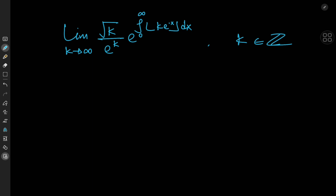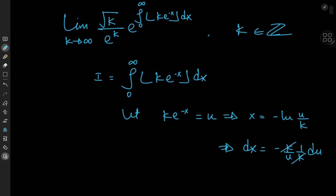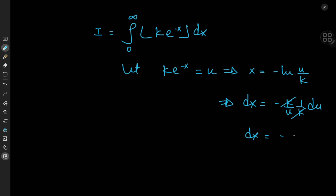It makes perfect sense to focus our attention on the integral first. Let's call I the integral from 0 to infinity of floor(k times e to the negative x) dx. We're going to perform a u-substitution: let k times e to the negative x equal u. This implies that e to the negative x equals u over k, or x equals negative log(u over k), and dx equals negative 1 over u, du. We can also write x as log(k over u) using properties of the logarithm.